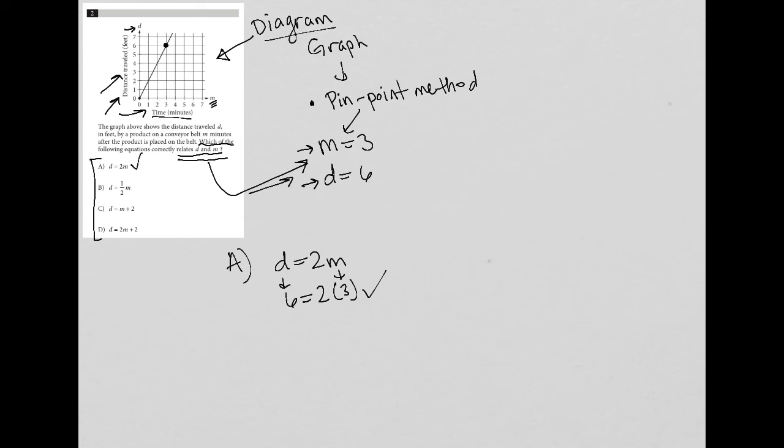If I were to try B, I'd have D equals one half M. And then I just try that. So replace D with six, replace M with three. And I see that that is not equal. So B cannot be the right answer.